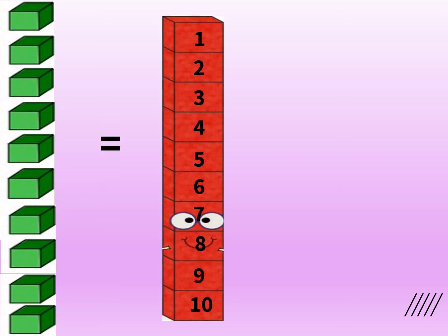Now let's see how many blocks of 1s we have here. Let's count: 1, 2, 3, 4, 5, 6, 7, 8, 9 and 10. There are 10 blocks of 1s. Now we see that all these 10 blocks are joined together to make a bar of 10. Now 10 is represented by this red bar. That means 10 ones is equal to 10, which can also be written as 10.